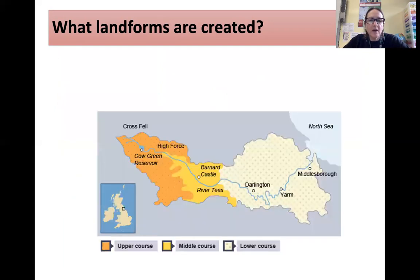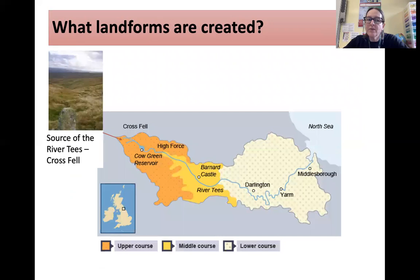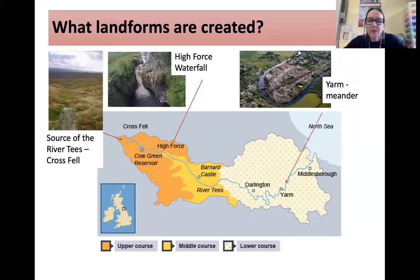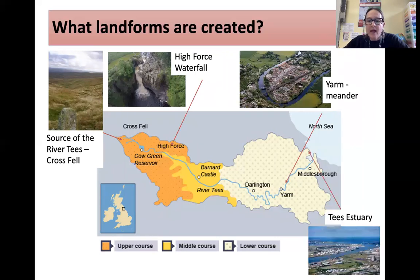Looking at the landforms and where they are: that's the source of the River Tees at Crossfell, 893 metres above sea level, located on the Pennines. That's a lovely aerial image of High Force, the famous waterfall in the upper course of the river. And then in the lower course, we can see Yarm — the meander of Yarm with the bridge — and the Tees estuary as well.